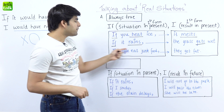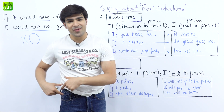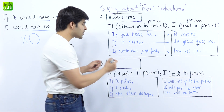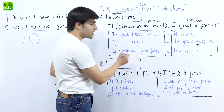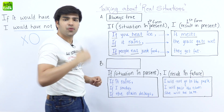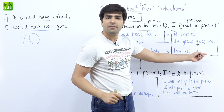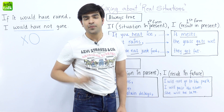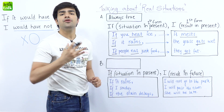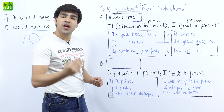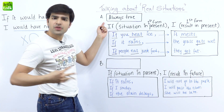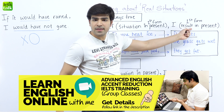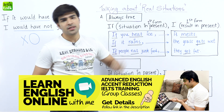Third example: if people eat junk food, what happens? They get fat — well, not offending anybody, that's the basic phenomenon. The situation is 'if people eat junk food' — 'eat' being the base form. In the result part: they get fat. So basically, when you talk about real life situations that are a general or universal truth — we call it the always true situation — you use 'if', the situation in present, and the result in present, using the first form in both parts of the sentence.